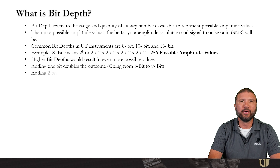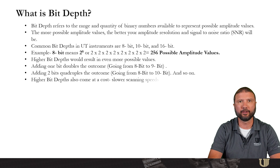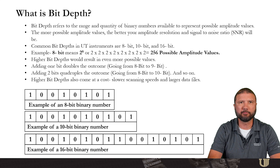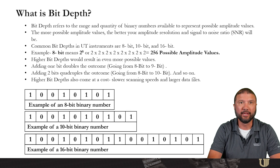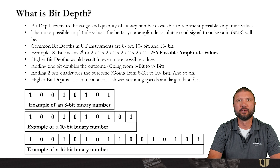For example, 8-bit means 2 to the 8th power, or 256 possible amplitude values. Higher bit depths would result in even more possible values — if I add 1 bit, that doubles the outcome; if I add 2 bits, it quadruples the outcome, and so on. Higher bit depths also come at a cost: slower scanning speeds and larger data files.